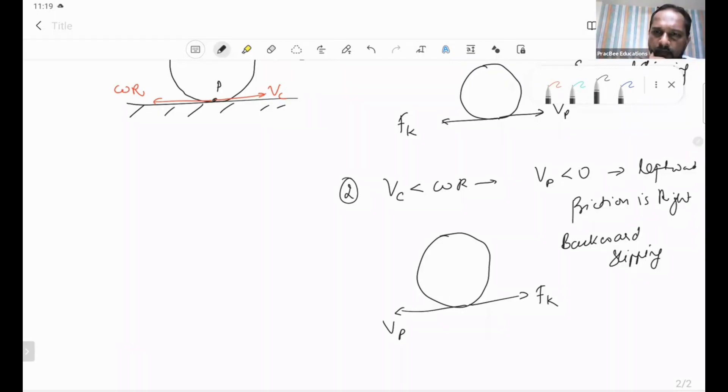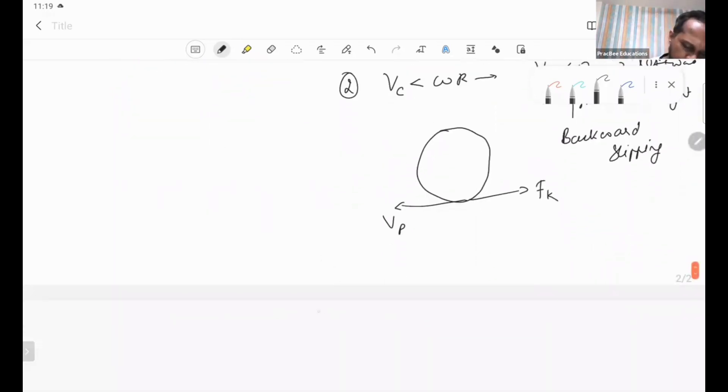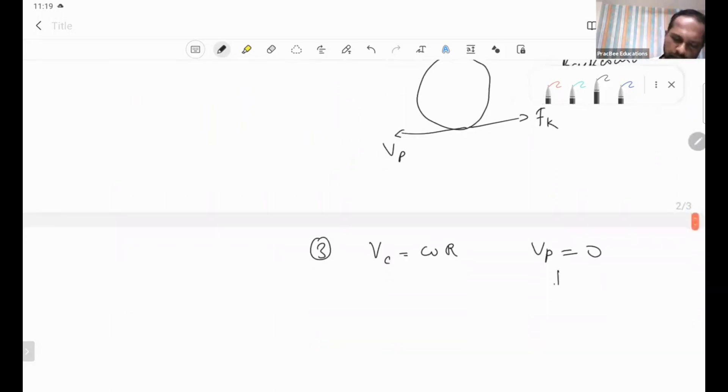That is called backward slipping. And the third one which is the most important one, where Vc is equal to omega R, where the point of contact has zero velocity. In this situation the friction is either zero or if there is friction, friction is static in nature.